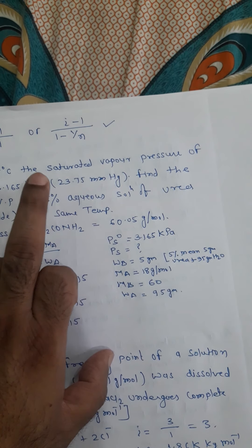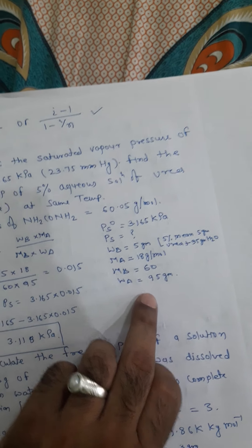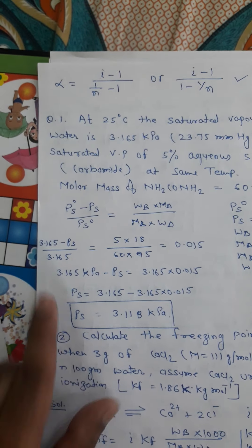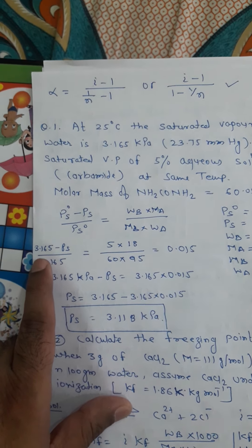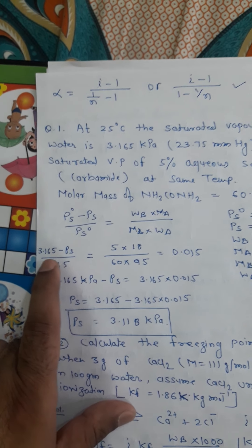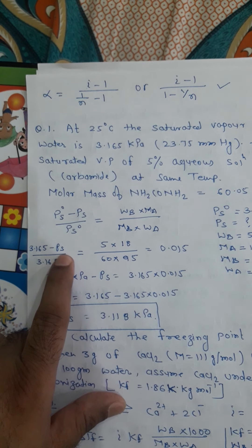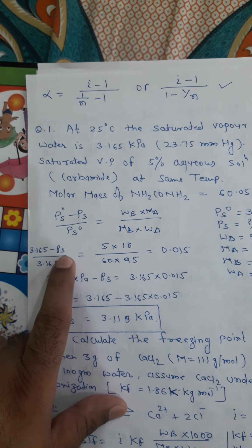MB is the molar mass of the solute. Solute is what? Urea. Molar mass of urea is 60.05 but we are taking 60. WA, the mass of solvent which is equal to 95 gram because it is a 5 percent aqueous solution.